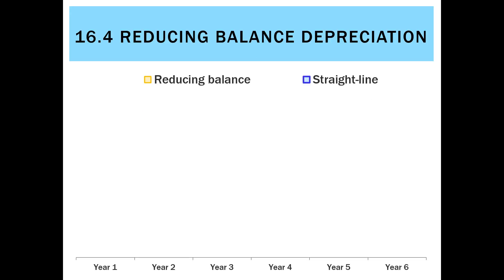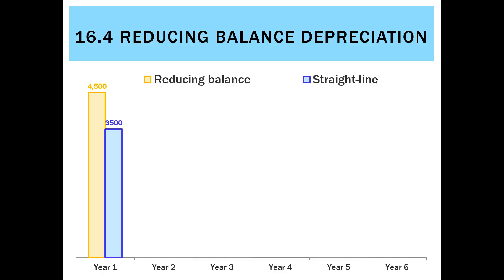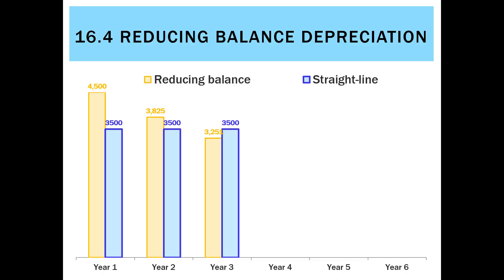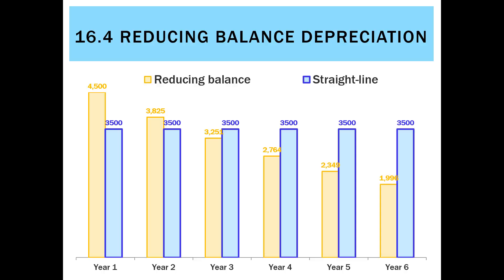Looking at this as a chart, we can see there's a fair difference between the two methods. In year one, reducing balance charges more depreciation than straight line. In year two, it's a little closer but reducing balance still charges more. In year three, reducing balance actually becomes less than straight line, and by year four it's much less. By year five and six, we're charging almost half the depreciation compared to straight line's consistent $3,500 every year.